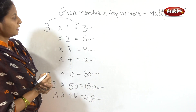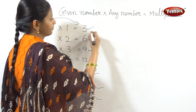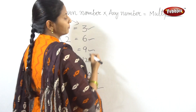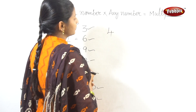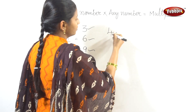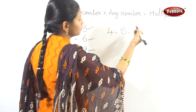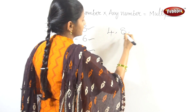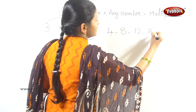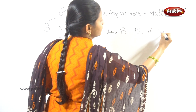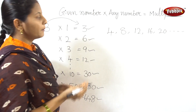For example, multiples of 4: 1 multiplied by 4 is 4, 2 multiplied by 4 is 8, 3 multiplied by 4 is 12, 4 fours are 16, 5 fours are 20, and so on. Multiple of 6.